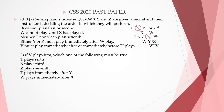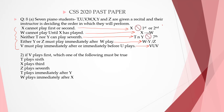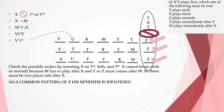Seven piano students are given a recital and their instructor is deciding the order in which they will perform. X cannot play first or second. W cannot play until X has played. Neither T nor Y can play seventh. Either Y or Z must play immediately after W plays. V must play immediately after or immediately before U plays. You cannot remember all these conditions together, so a good trick is to create small codes for each condition — a very useful tip. We cannot remember the whole sentence but we can remember what it says by creating a shorter code.